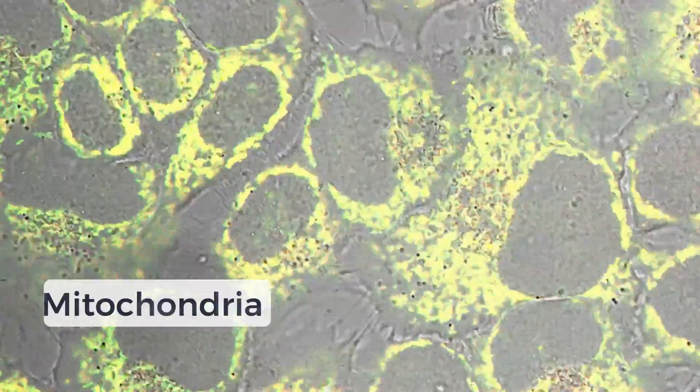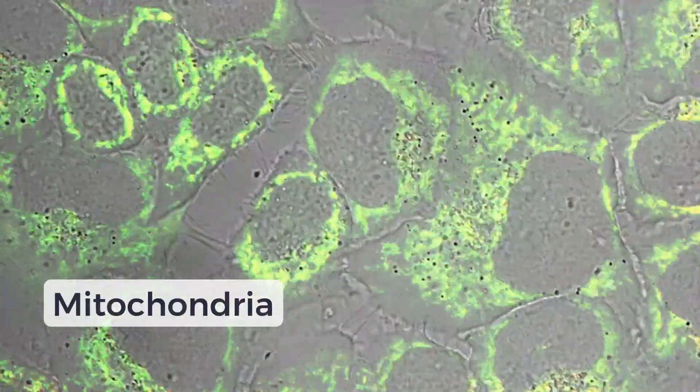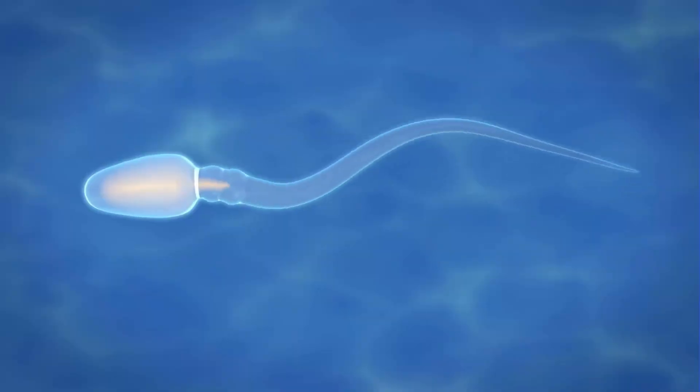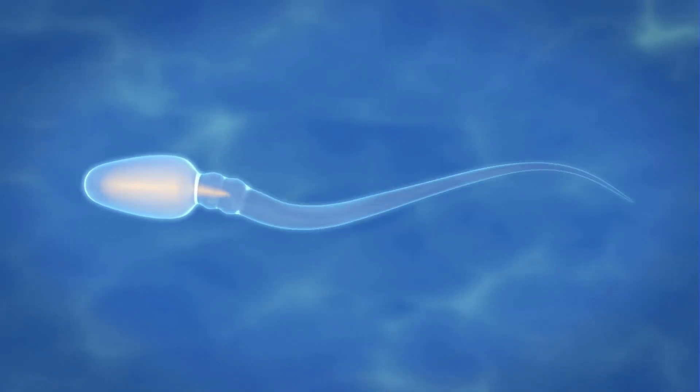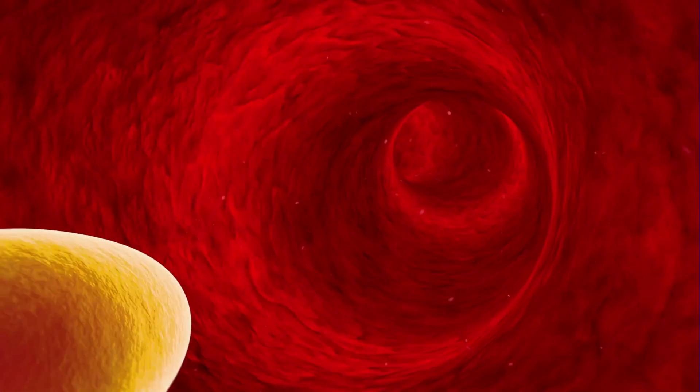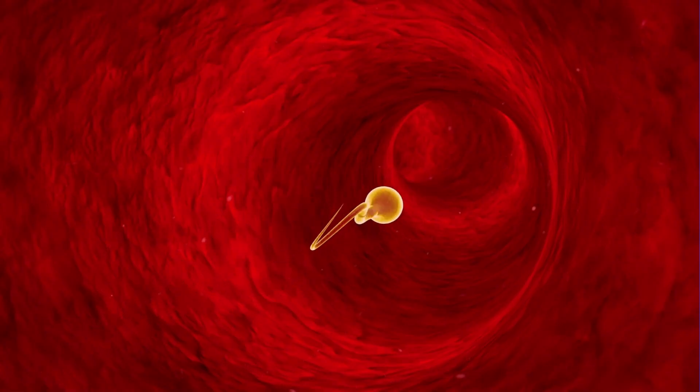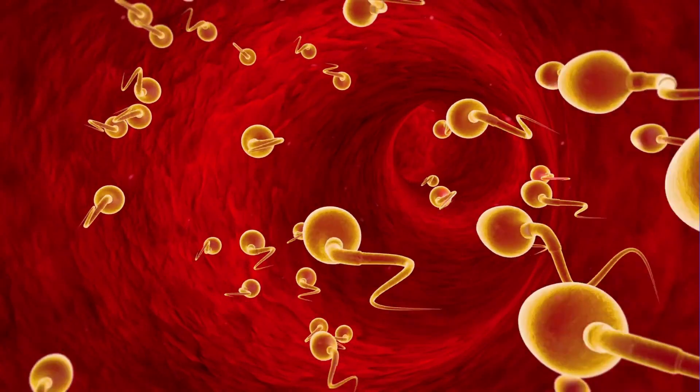Now that they're looking sharp, the midpiece is packed with mitochondria to power swimming and the tail is built for speed. They look the part, but they can't swim just yet. They still need a final polish.